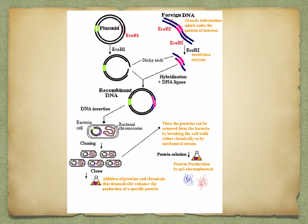In summary, we looked at inserting a gene into a vector such as a bacterial plasmid, then inserting this plasmid into a bacterium and cloning that bacteria. In the next topic, we're going to look at how the bacteria produce a protein. And that concludes our lesson.